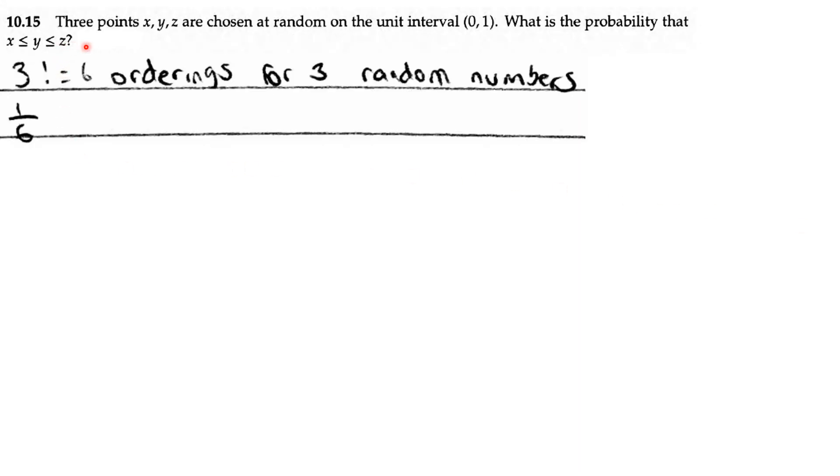AOP counting and probability, problem 10.15. Three points X, Y, and Z are chosen at random on the unit interval [0,1]. What is the probability that X ≤ Y ≤ Z?